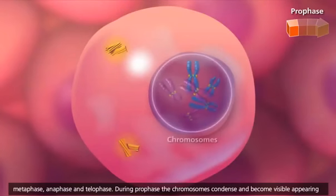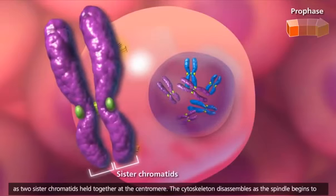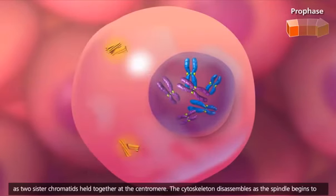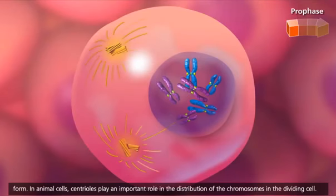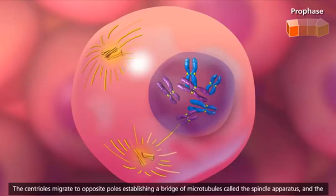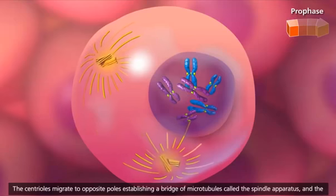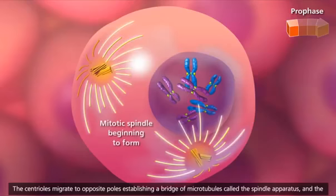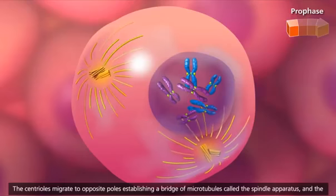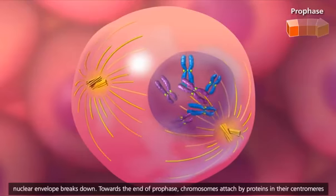During prophase, the chromosomes condense and become visible, appearing as two sister chromatids held together at the centromere. The cytoskeleton disassembles as the spindle begins to form. In animal cells, centrioles play an important role in the distribution of the chromosomes in the dividing cell. The centrioles migrate to opposite poles, establishing a bridge of microtubules called the spindle apparatus, and the nuclear envelope breaks down.